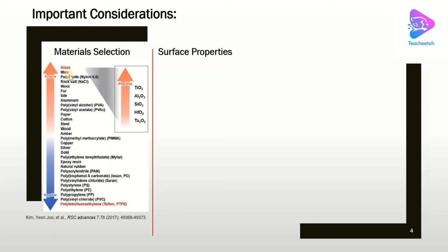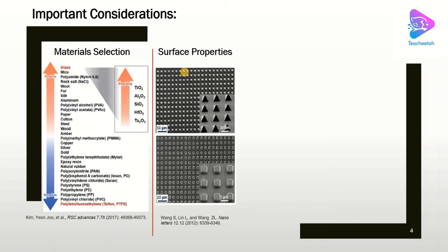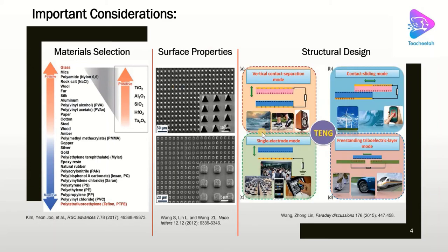The other important consideration is the surface properties of the contact materials. Since TNG is based on tribology and charge generated on the surface, there are methods to improve the output, such as improving the morphology and contact area by adding micro or nano structures or chemical functionalization. Finally, structural design is very important. Depending on the mode of operation, we can have specific designs to effectively transfer mechanical energy to the system to convert to electrical energy.